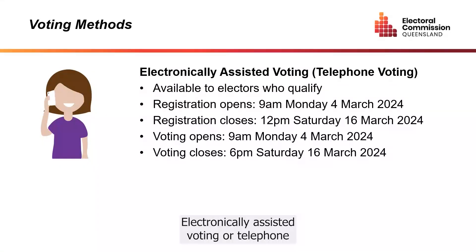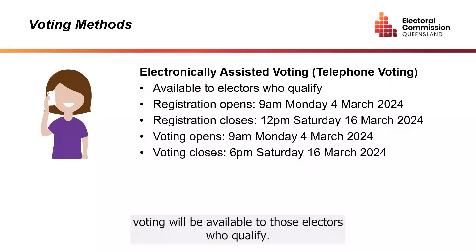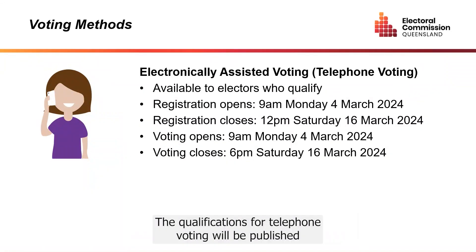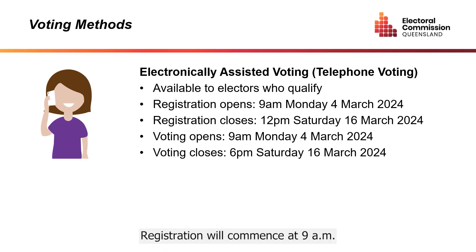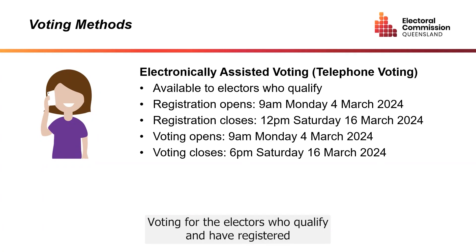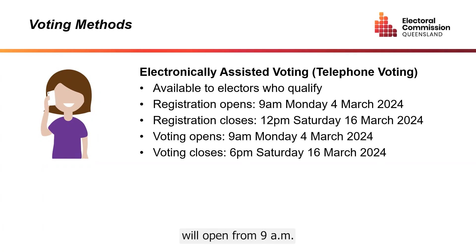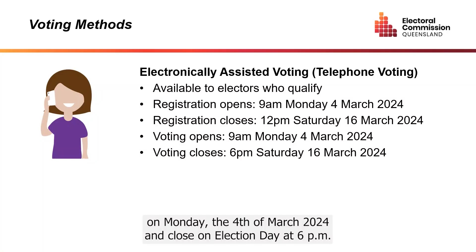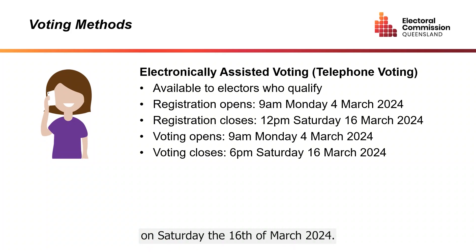Electronically assisted voting or telephone voting will be available to those electors who qualify. The qualifications for telephone voting will be published on the Electoral Commission of Queensland's website. Registration will commence at 9am on Monday 4 March 2024 and close at 12pm noon on Saturday 16 March 2024. Voting for electors who qualify and have registered will open from 9am on Monday 4 March 2024 and close on Election Day at 6pm on Saturday 16 March 2024.